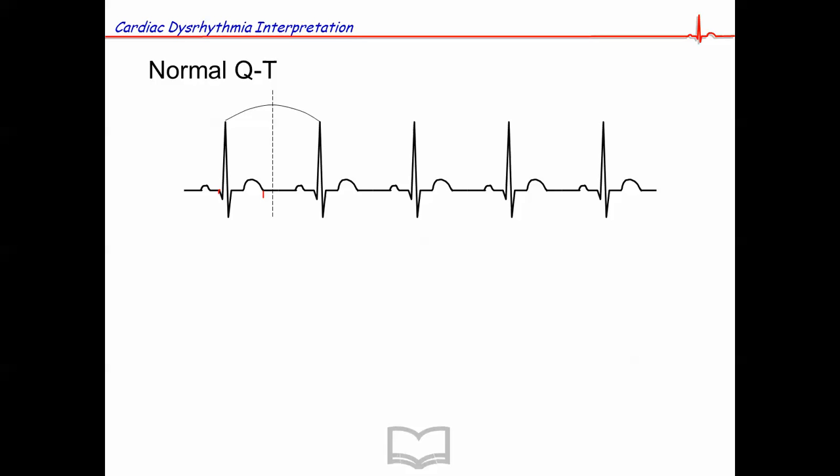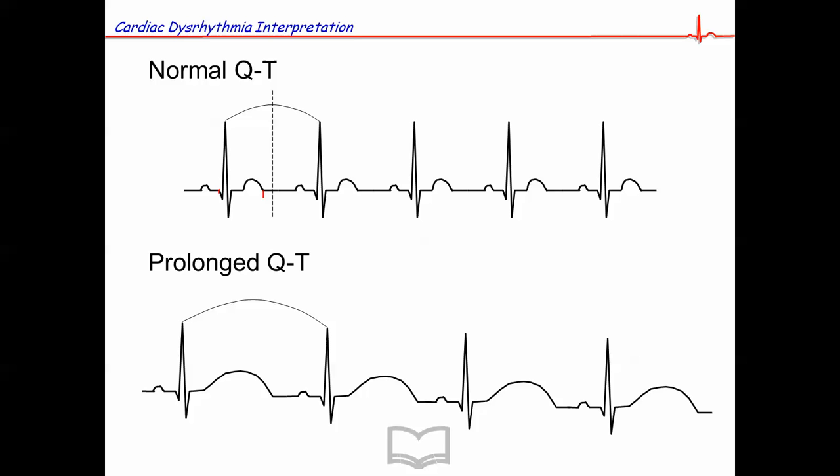In a case of prolonged QT, what we see is the QT interval is greater than half of the R to R interval. Here's the onset of the QRS, here's the end of the T wave, and you can see it ends later than the halfway mark between the two R waves.